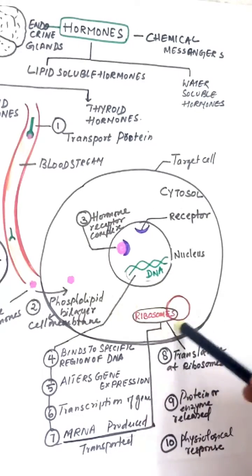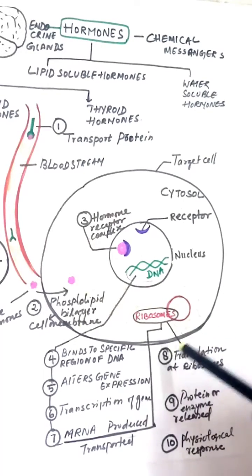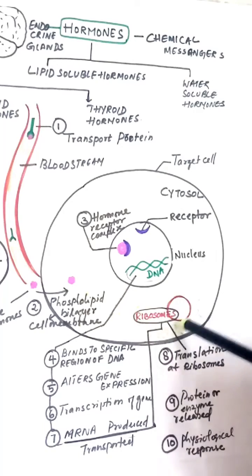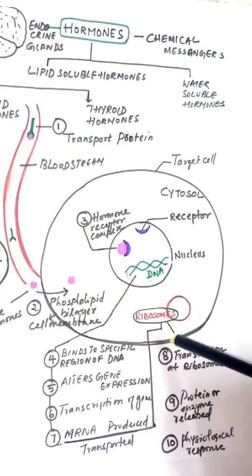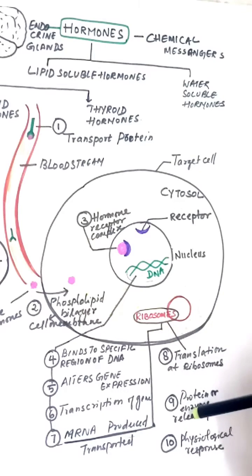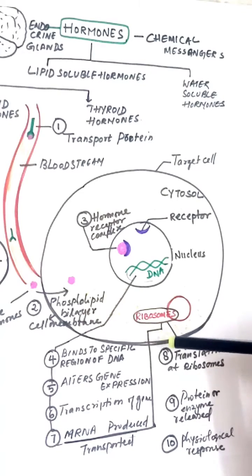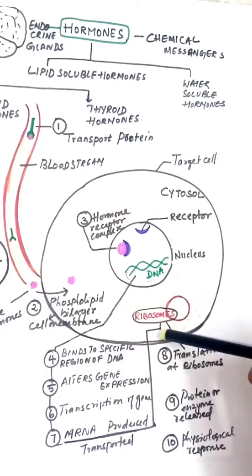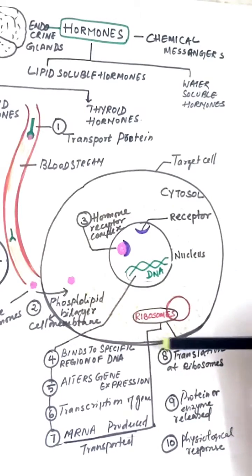At the ribosomes, translation is made—that is, it directs the synthesis of proteins to be formed in the ribosomes. Once the fresh protein synthesis is completed, the protein or enzyme is released into the cell, and the new protein which forms controls the cell activity. This is called the physiological response of the hormone.